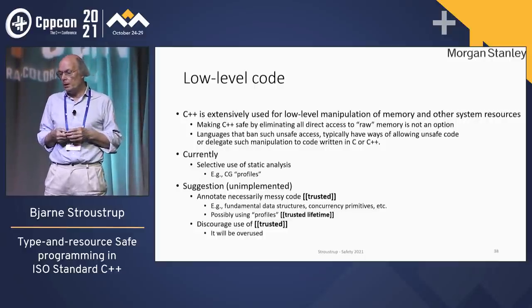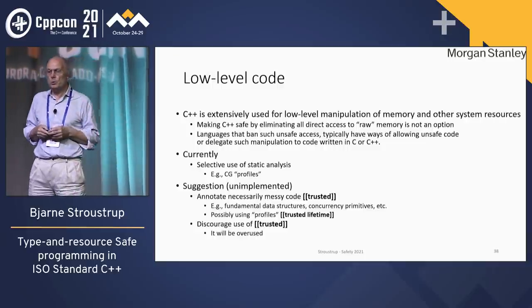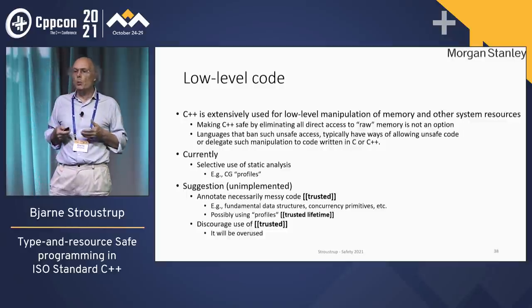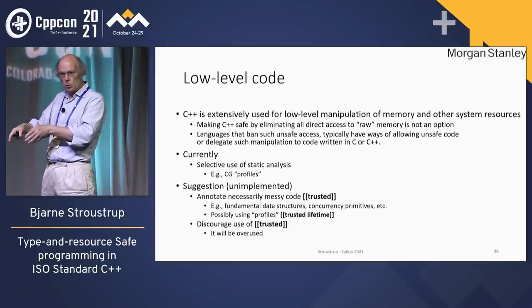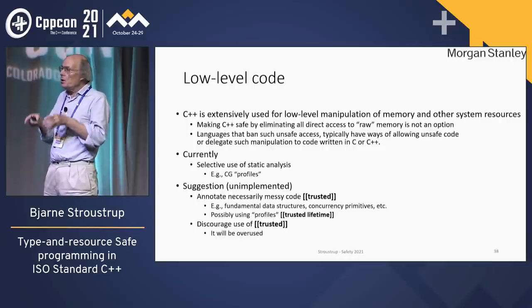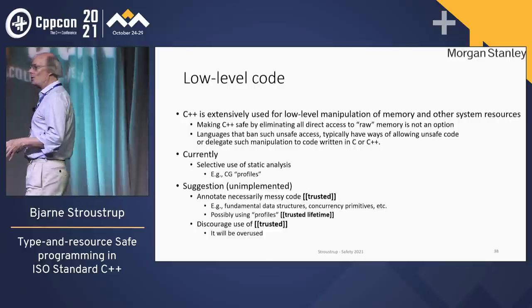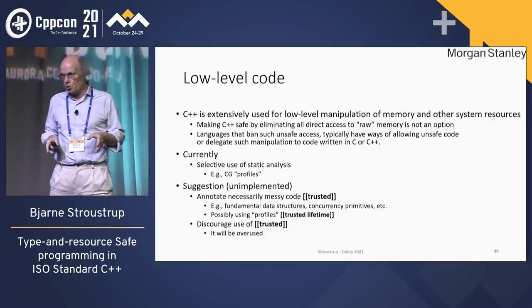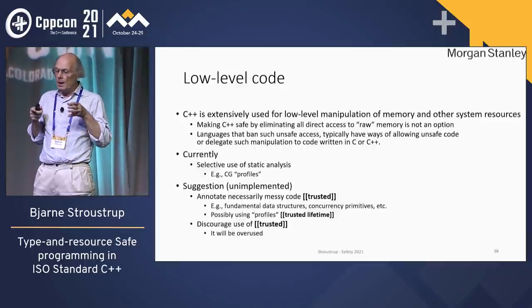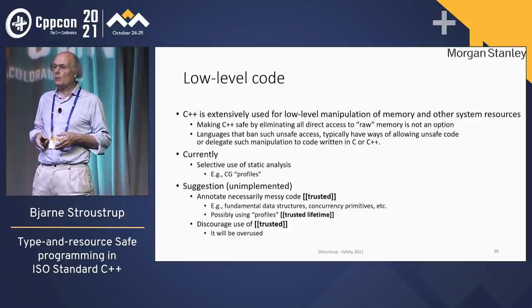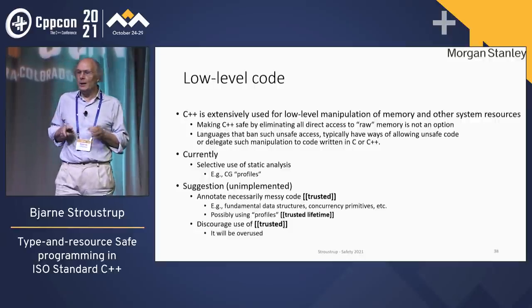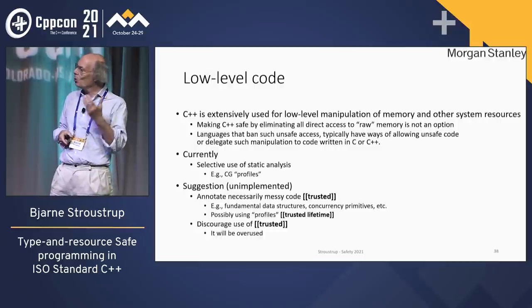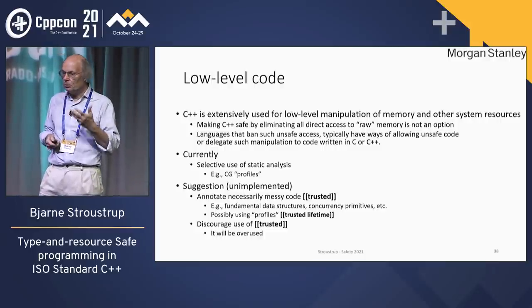I am suggesting — unimplemented — that we should be able to annotate messy code as being 'trusted.' Every system that deals with really messy code tends to have some way of saying this code is so messy that we need humans to look at it and certify it. That kind of facility is always overused — any sloppy programmer will just slap 'trusted' on the code. On the other hand, a static analyzer can look for 'trusted' and call for a code review. Maybe it shouldn't be called 'trusted' — it should be called 'messy.' Basically, the idea is it calls attention to where our mechanical tools come to an end.